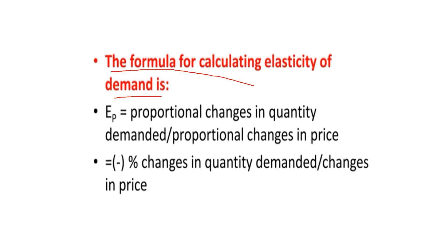Here is the formula for calculating price elasticity of demand — please remember it because you often receive match-the-following questions on formulas. The formula is: proportional change in quantity demanded divided by proportional change in price. The percentage change in quantity demanded or change in price is always shown with a negative sign.